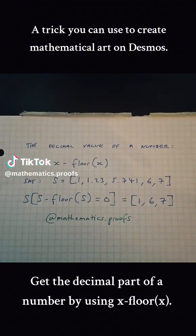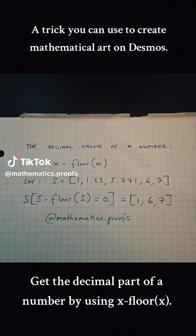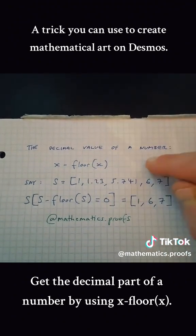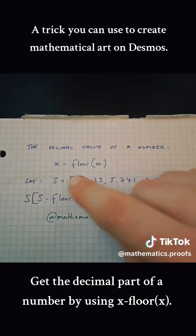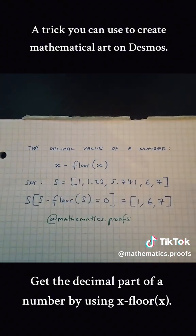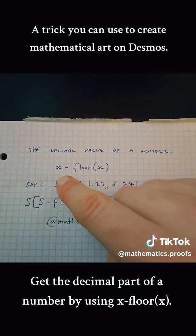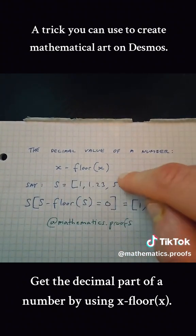Here is a cool trick that you can use to create mathematical art on Desmos. You can find the decimal part of a number. Let's say that number is x. If you want just the decimal part, you use x minus floor x.